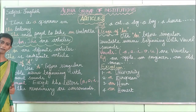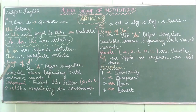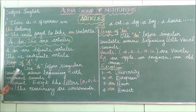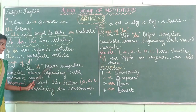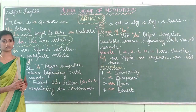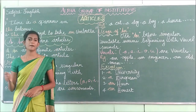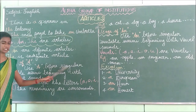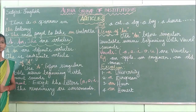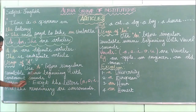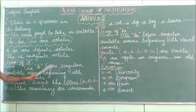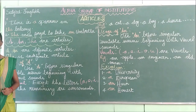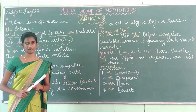Now we are going to see the usage of 'a'. Use 'a' before singular countable nouns beginning with consonant sounds. This is the rule for the usage of 'a'. Singular means only one — for example, pen, pencil, cat, dog. Countable nouns means you are able to count them. So if the word starts with a consonant sound, you have to use the article 'a'.